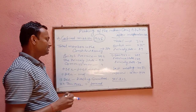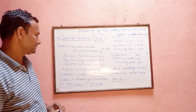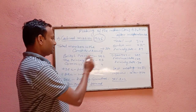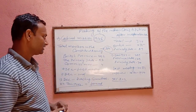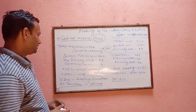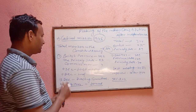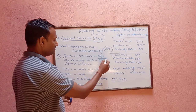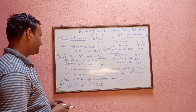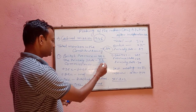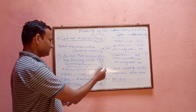The Cabinet Mission established the Constitutional Assembly. There were 389 members in the Constitutional Assembly: 292 from British provinces, 93 from Princely states, and 4 from commissionary provinces.